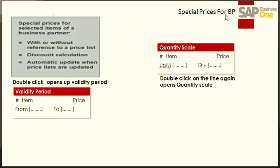Just like price lists, special prices for business partners can have period and volume discounts. You can double-click on the special price to open the fields to enter the dates for when the price is valid. When you double-click a second time you can define a volume discount based on the quantity scale for the validity period you just defined.